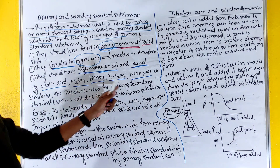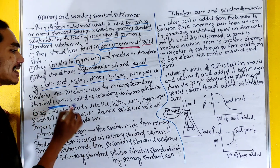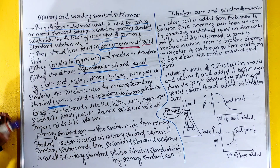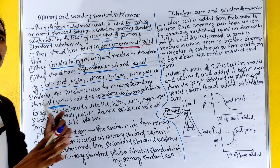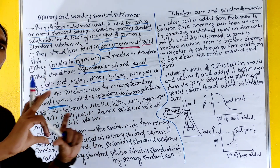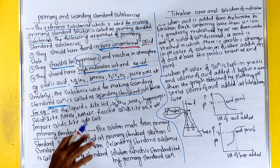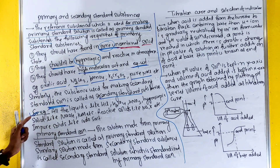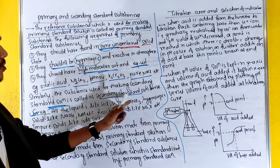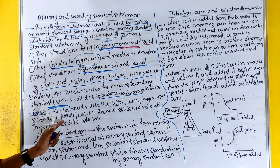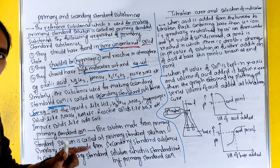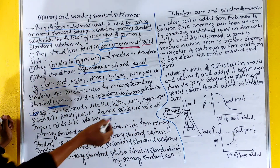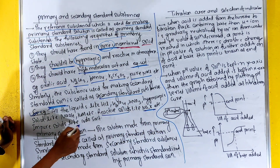Secondary standard substances are used for making secondary standard solution. Examples of secondary standard substances include hygroscopic solids like NaOH, KOH; reactive solids like NaK, potassium, sodium; and impure solids like iodine salt.